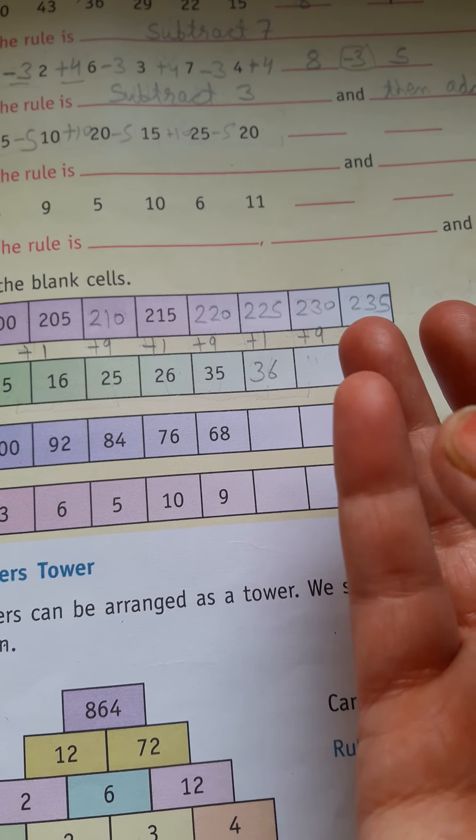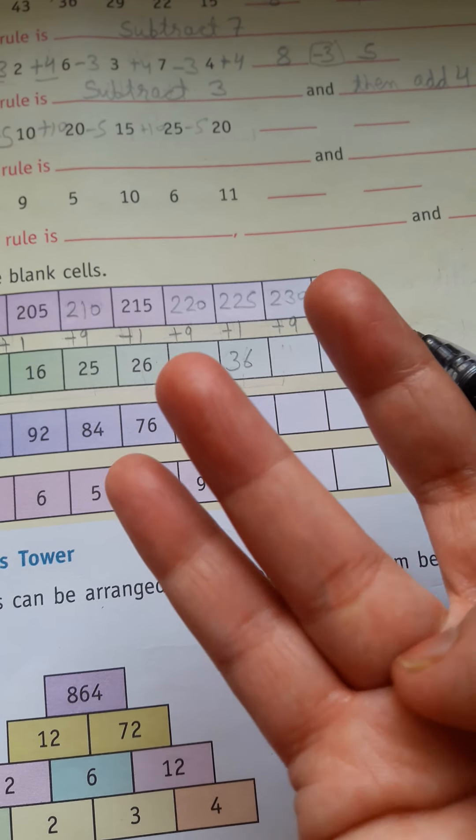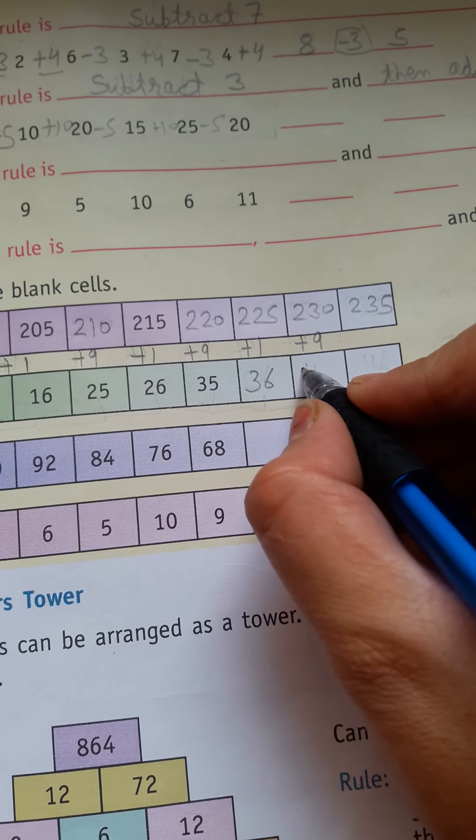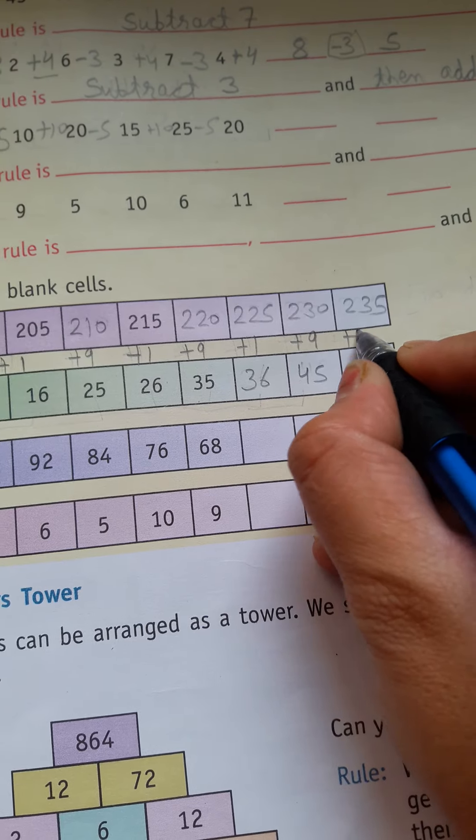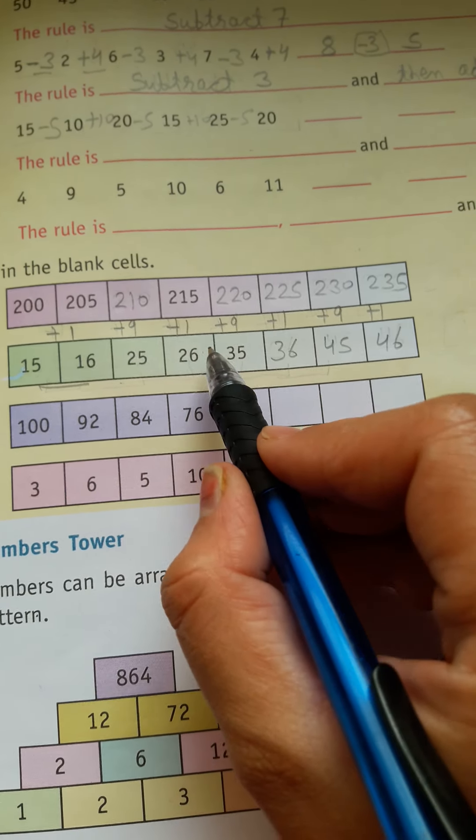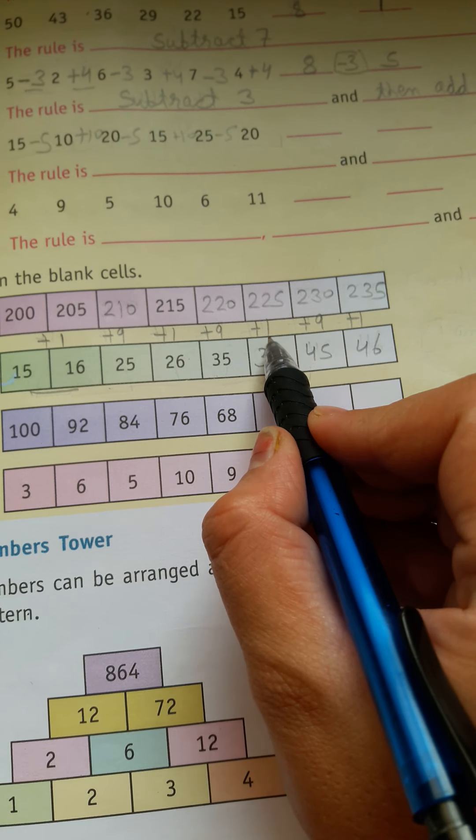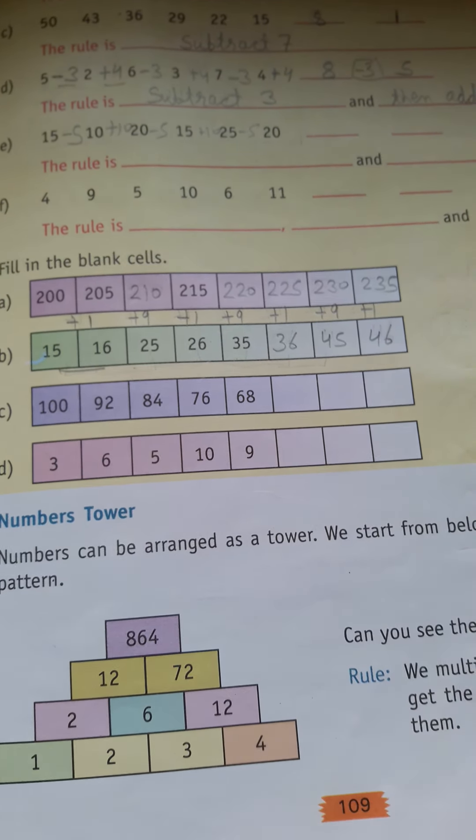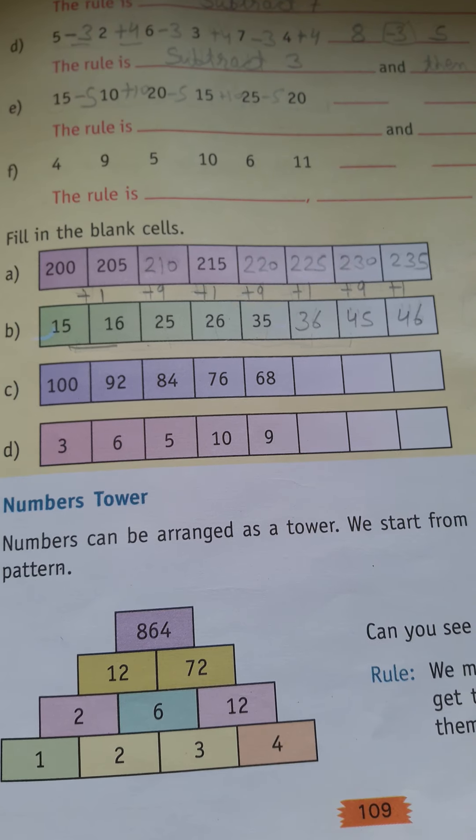After 35 comes 36, then add 9. We will add 9. After 36: 37, 38, 39, 40, 41, 42, 43, 44, 45. Now add 1: 46. One time add 1, one time add 9. Three times add 1, three times add 9. We follow this rule.